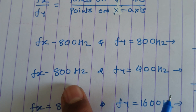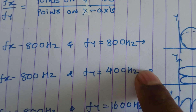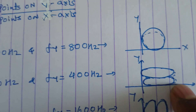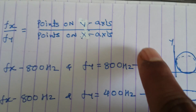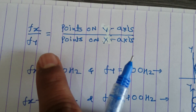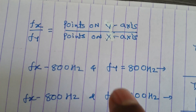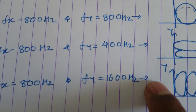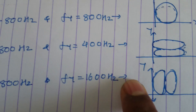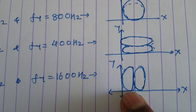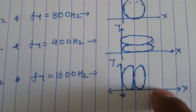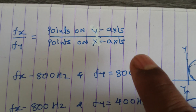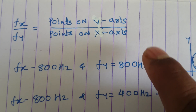If FX is 800 and FY is 400, then the pattern will touch the X axis 2 times and the Y axis 1 time. So by this relation, FX to FY is equal to 1 to 2.